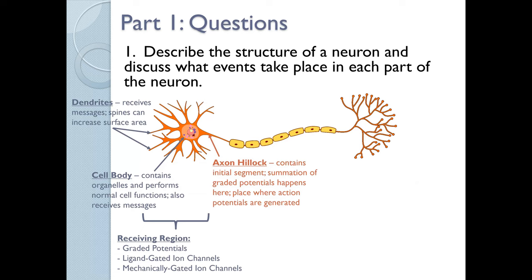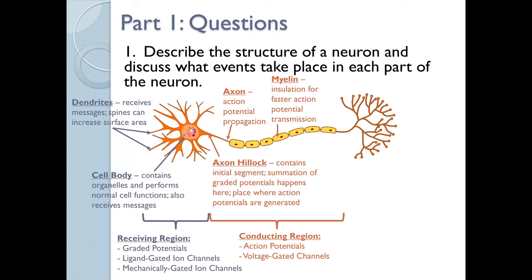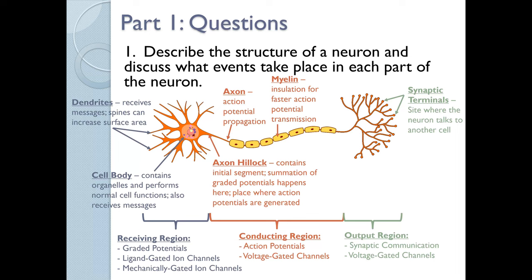The dendrites and cell body together are part of what's called the receiving region. This is the area of the neuron where you would have graded potentials, and where you would find ligand-gated ion channels and mechanically-gated ion channels, because both of these types of channels lead to graded potentials. Then we have the axon hillock, which is where the cell body meets the axon. This contains the initial segment — the place where summation of graded potentials happens and where action potentials are generated. Then we have the axon itself, which is the site of action potential propagation. Some axons are covered in myelin, which acts as insulation for faster action potential transmission. The axon hillock, axon, and myelin together compose the conducting region of a neuron.